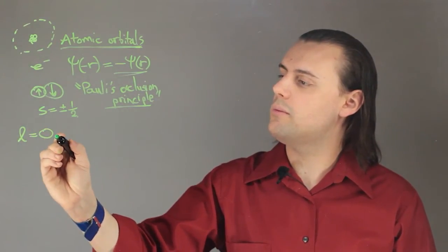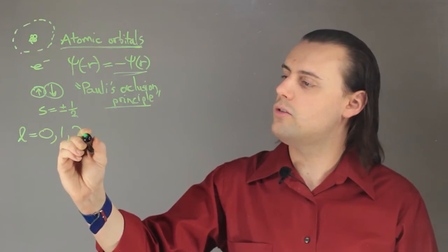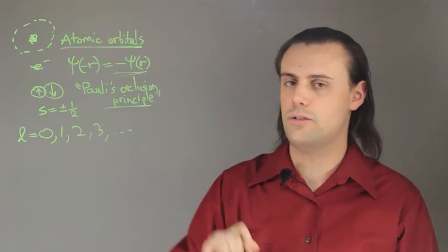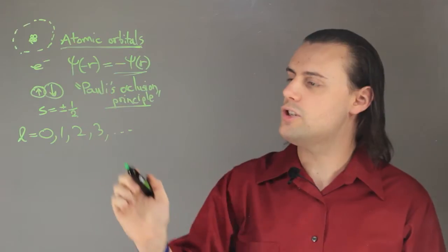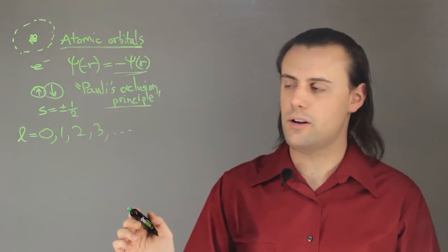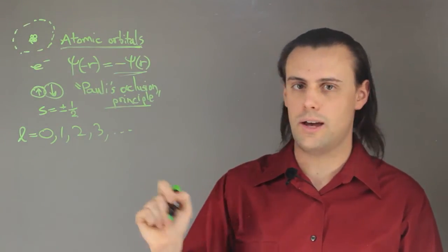And this is an integer. It can be equal to zero, one, two, three, so on and so forth. As the energy level increases, you can have a different number of atomic orbitals in that energy level.